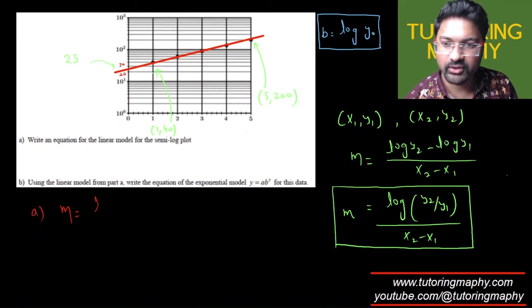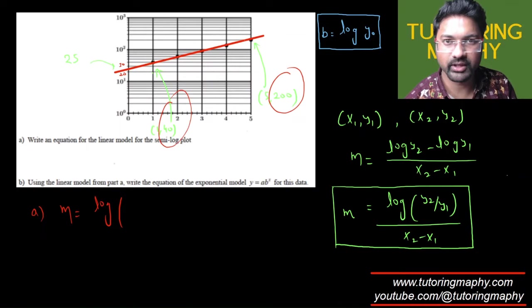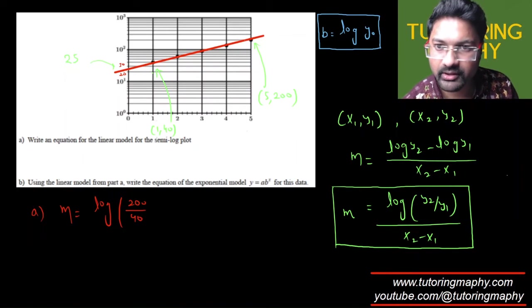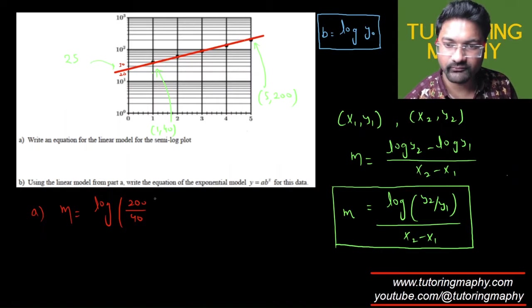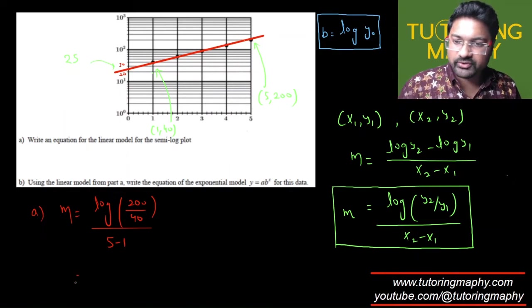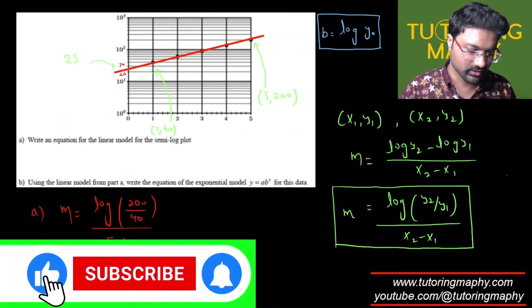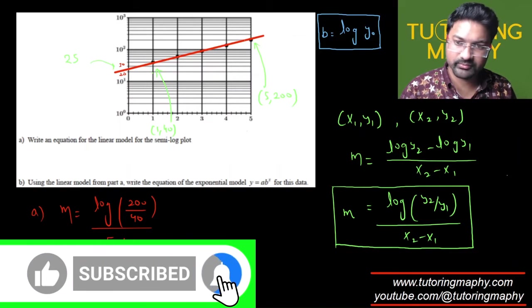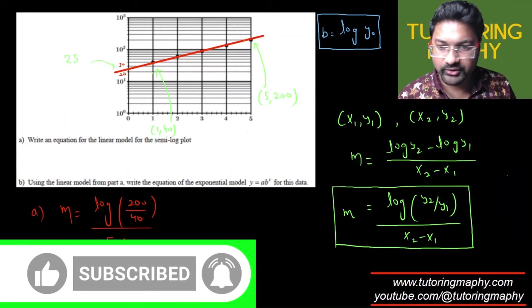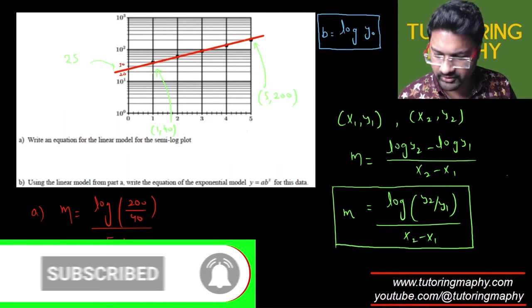Yeah, so the slope. What is the slope? That's going to be log of y₂ over y₁, y₂, y₁, the 200 over 40 over x₂ minus x₁, which is just 5 minus 1. I'm just going to grab my calculator over here and find this: 200 over 40, log of this value divided by 4.